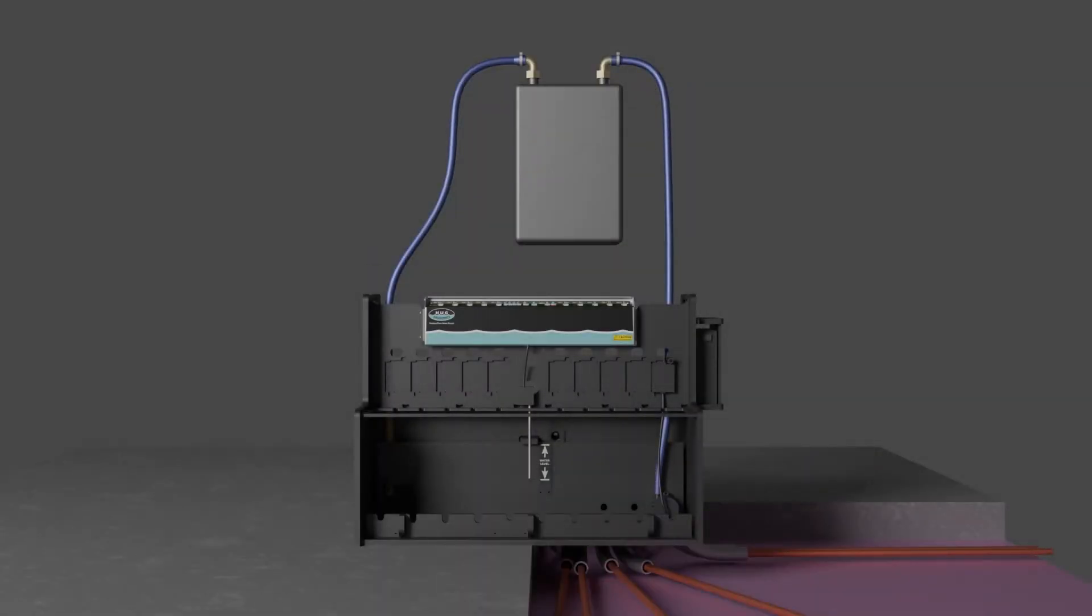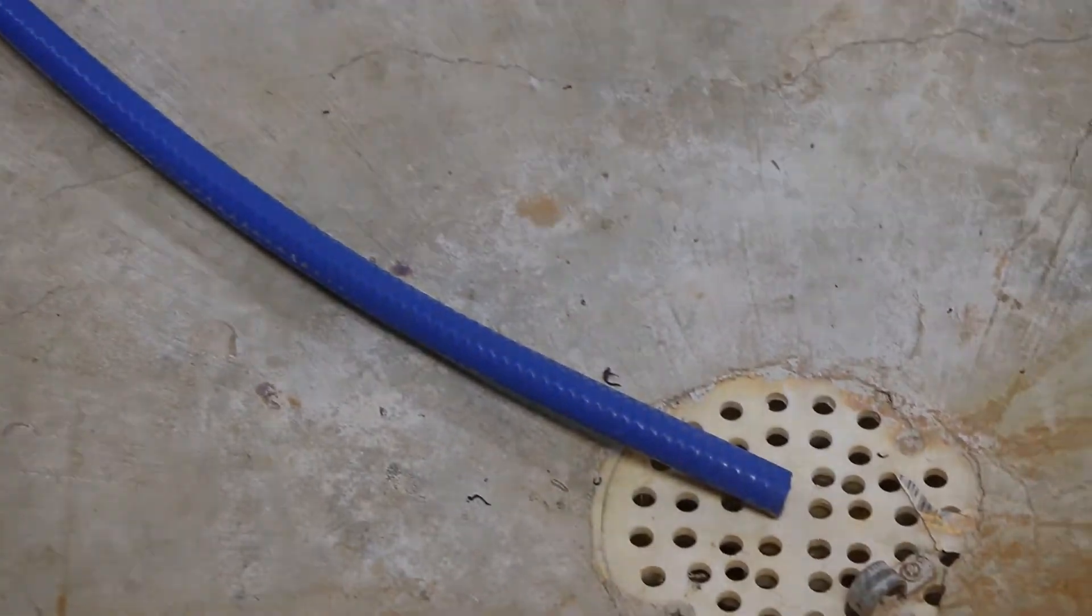Step 2: Connect the optional overflow to floor drain. The drain hose is not included and it is optional, but is not required to be hooked up.